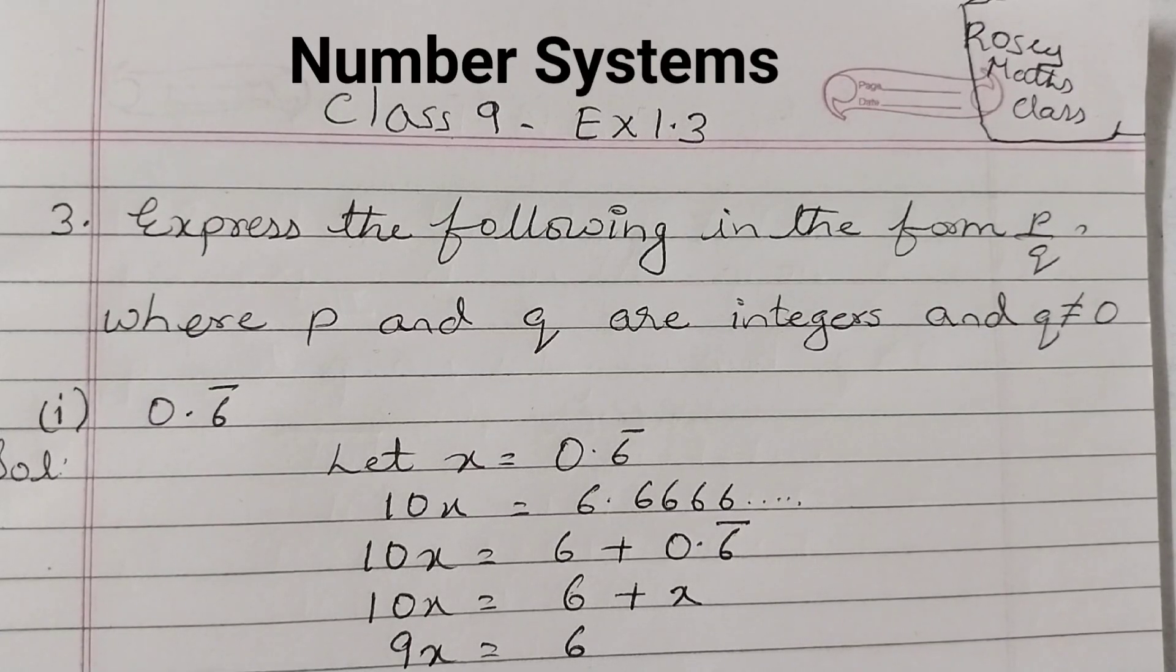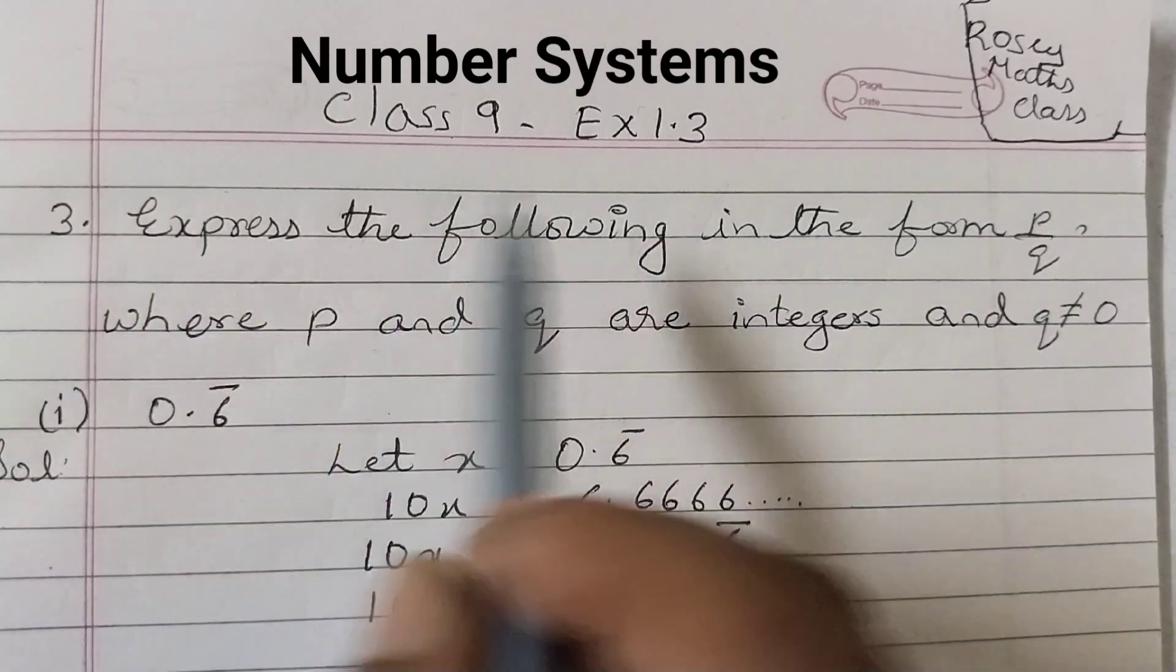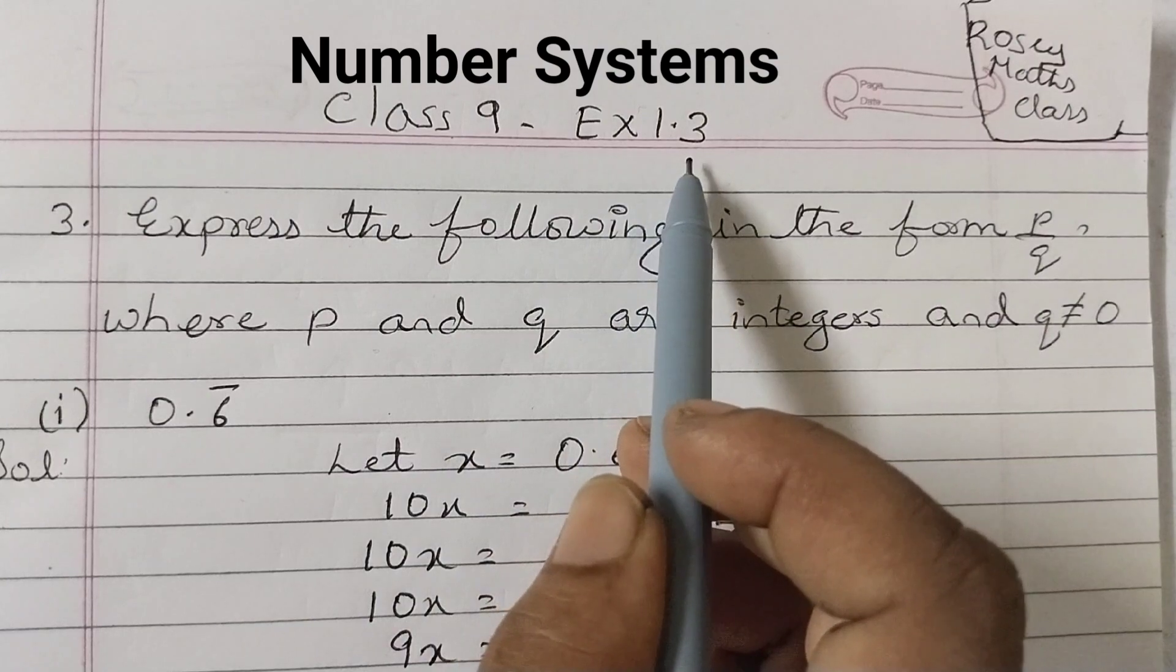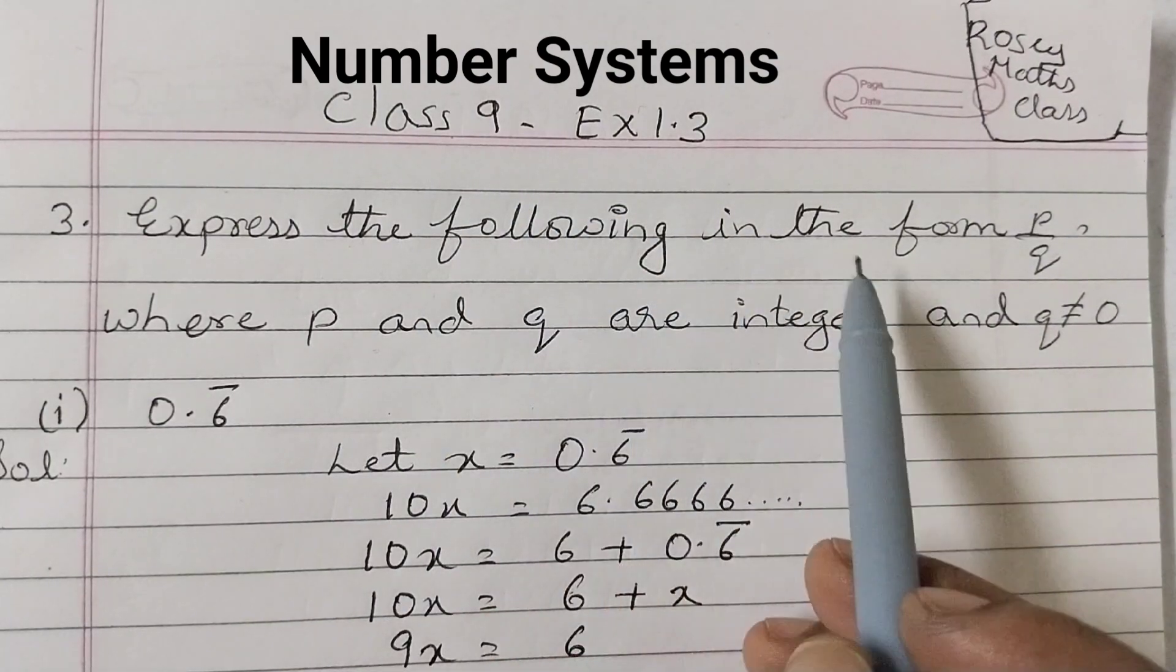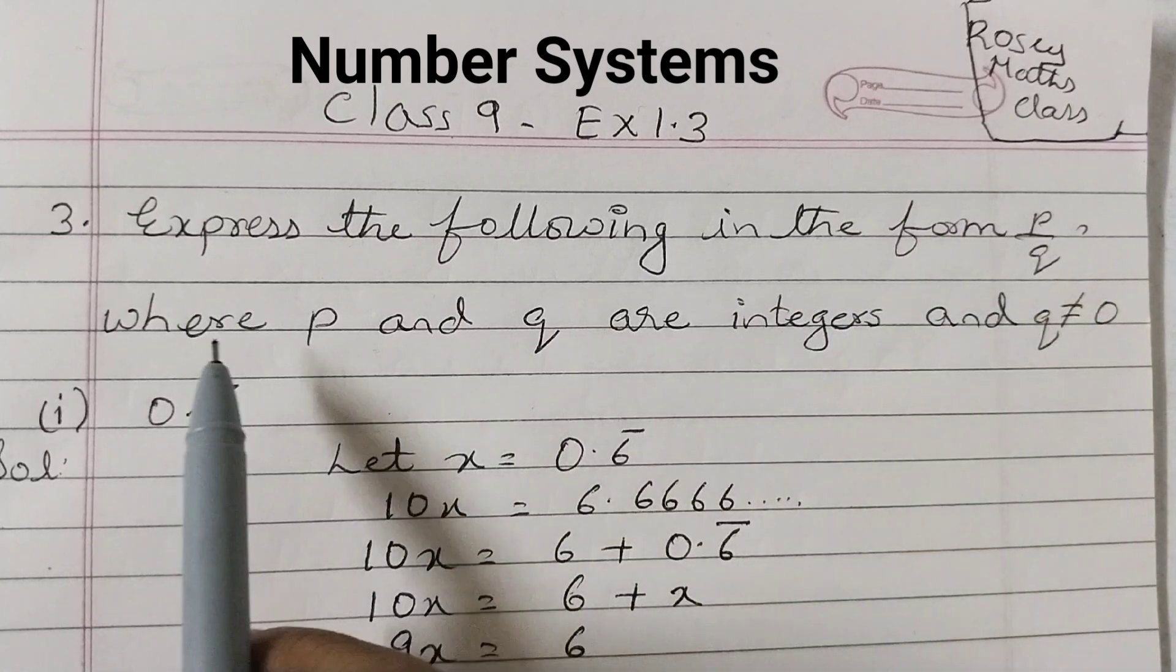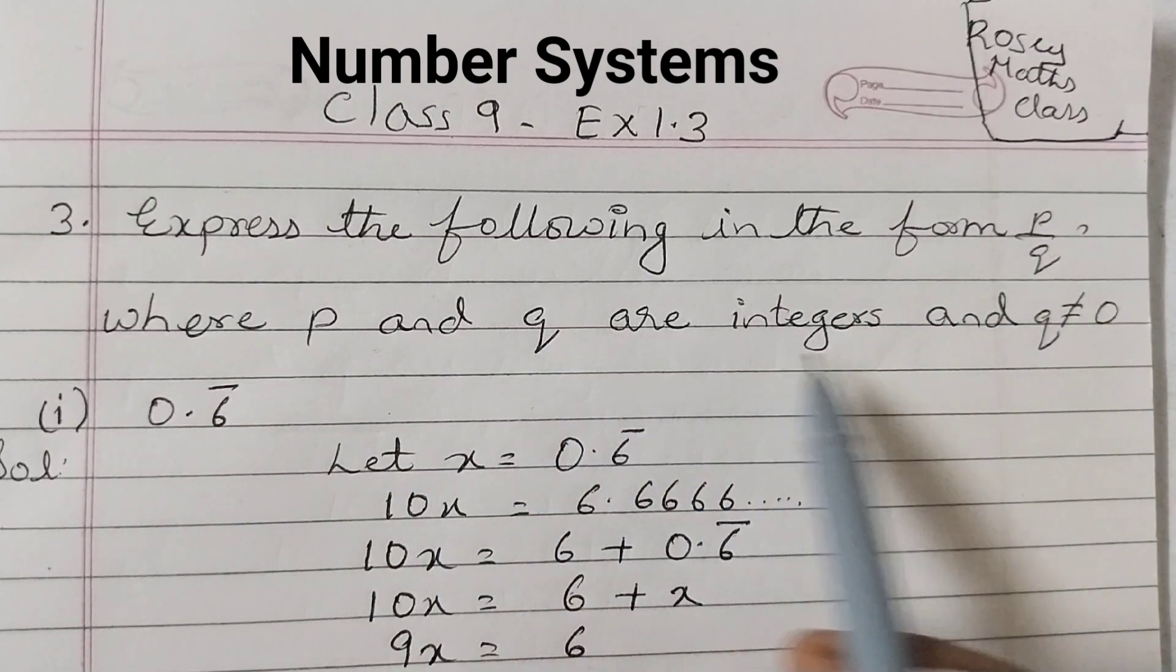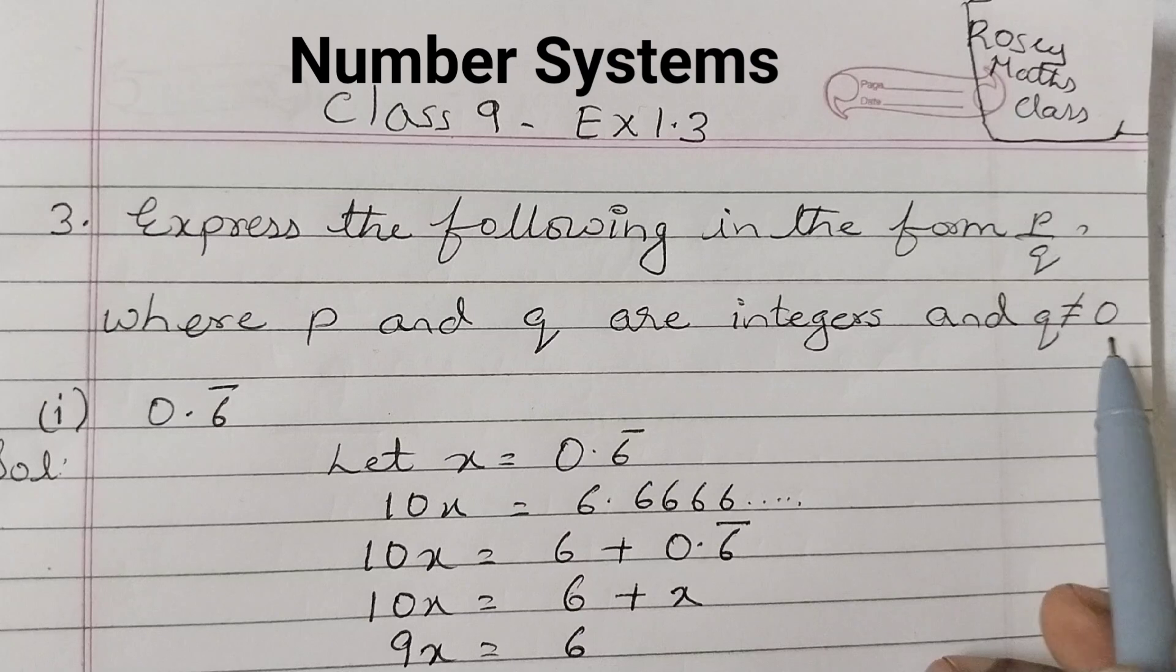Hello students, in this video we shall discuss question number 3 of exercise 1.3, Class 9 Number Systems. Express the following in the form p by q, where p and q are integers and q is not equal to 0.